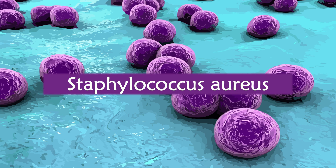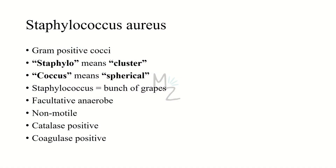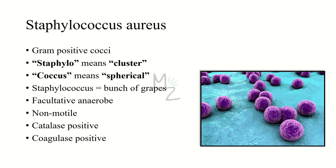Staphylococcus aureus is a gram-positive coccus. It has two words in it: first is 'staphylo,' which means cluster, and second is spherical. These are spherical bacteria, and Staphylococcus equals a bunch of grapes — it actually resembles a bunch of grapes. Staphylococcus aureus is a facultative anaerobe, meaning it can exist in the presence of oxygen and also in the absence of oxygen.